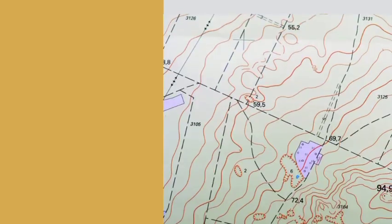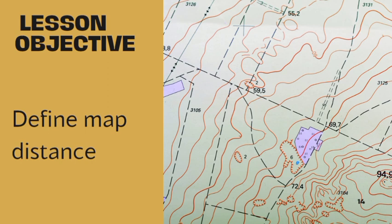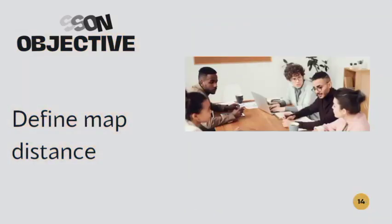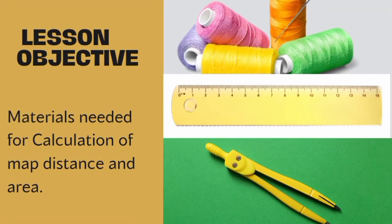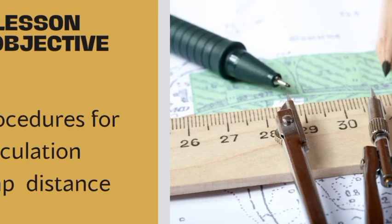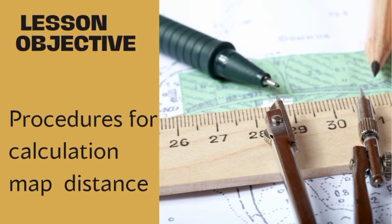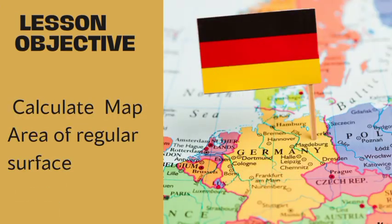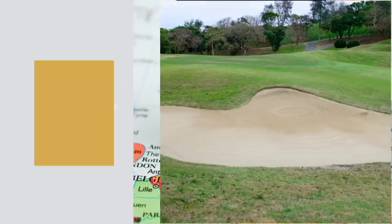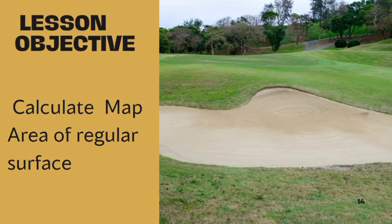We'll also be looking at the definition of distance along two points on a map — how do we define the distance between two points and how do we measure it. We'll look at some of the materials needed for map measurements, the procedures to carry out map measurements, the calculation of area of a regular surface, and also that of irregular surfaces.